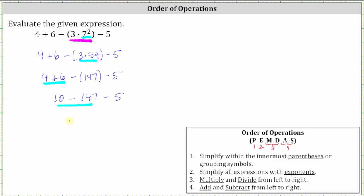The expression simplifies to negative 137 minus five. And of course our last step is to perform the final subtraction. Negative 137 minus five is equal to negative 142.